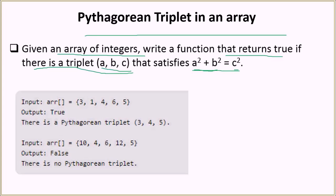Let's look at an example. In the first array, we have the Pythagorean triplet 3, 4, and 5 because 3 squared plus 4 squared equals 5 squared, so the output should be true. In the second example, we do not have a Pythagorean triplet, so the output would be false.